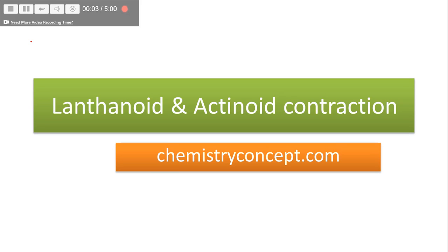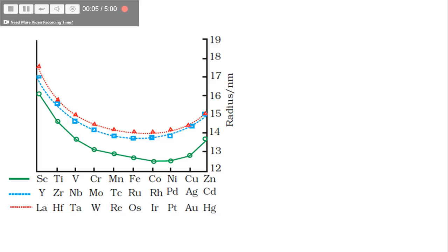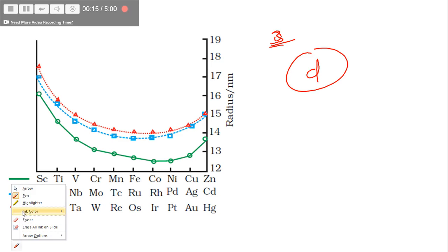Today we will talk about lanthanoid and actinoid contraction. Before I start, let me tell you about the variation of atomic radii in d-block elements. There are three series: 3d, 4d, and 5d.